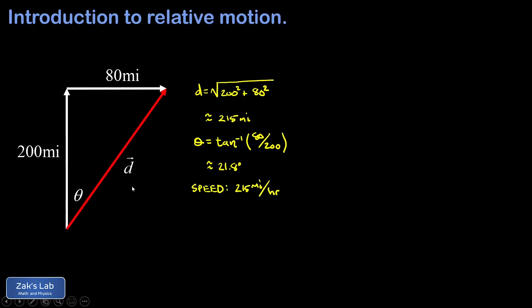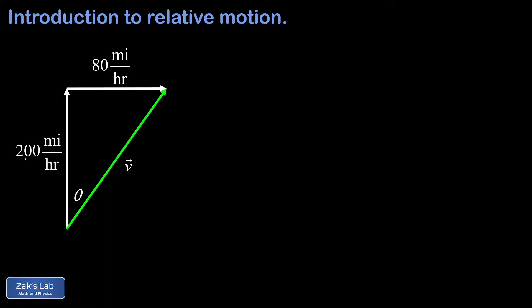What we've done here is totally equivalent to just adding the velocity vectors from the beginning. We take our northward velocity of the plane with respect to the air — 200 miles per hour — and our eastward velocity of the air with respect to the ground — 80 miles per hour — and add those velocity vectors head to tail. All the numbers in this right triangle are the same.